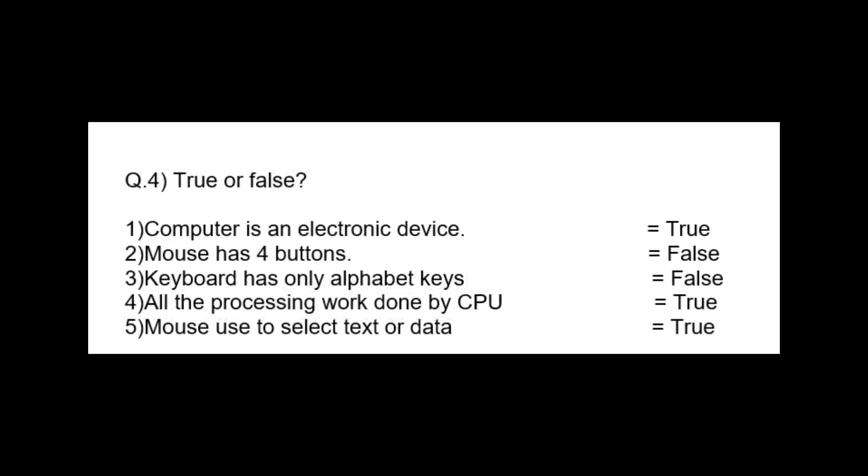Question number 4. True or false. First computer is an electronic device. Answer true. Second mouse has four buttons. Answer false.